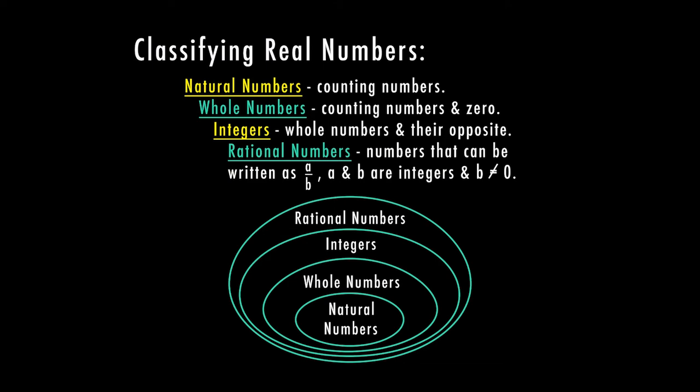First of all, we have our natural numbers. Natural numbers here in the middle would be considered our counting numbers. So counting numbers are just one, two, three, four, five, and so on — all the numbers that you would say if you were to go into a room and just count the number of people that are in the room.